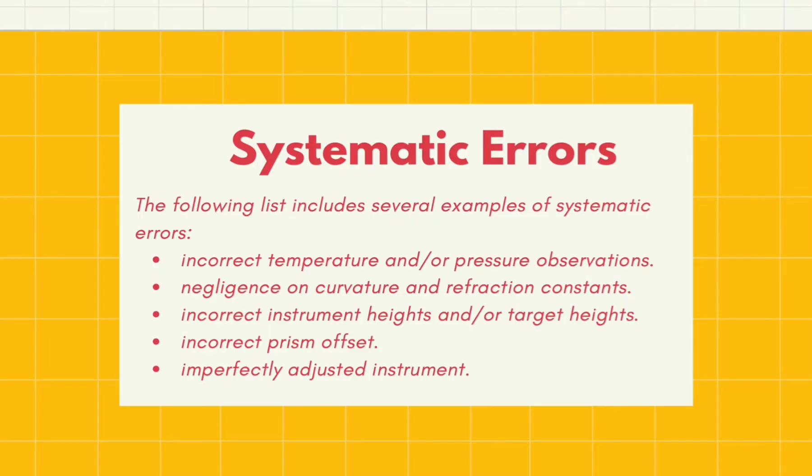Although some systematic errors are difficult to detect, the surveyor must recognize the conditions that cause such errors. The following list includes several examples of systematic errors: incorrect temperature and/or pressure observations, negligence on curvature and refraction constants, incorrect instrument heights and/or target heights, incorrect prism offset, and imperfectly adjusted instrument.